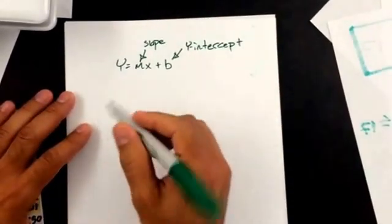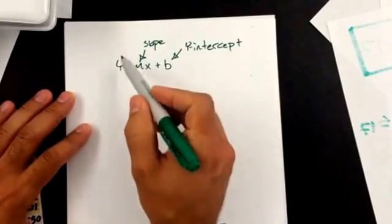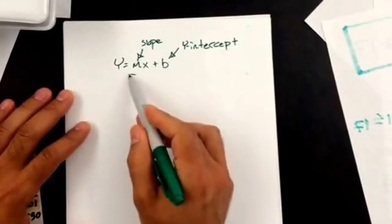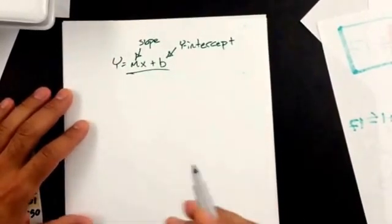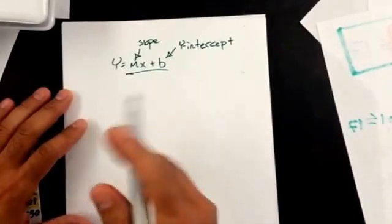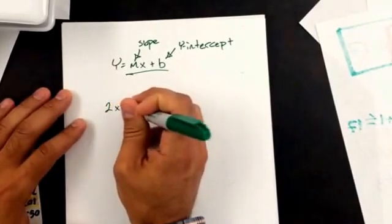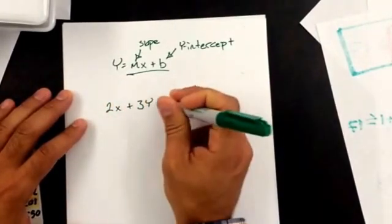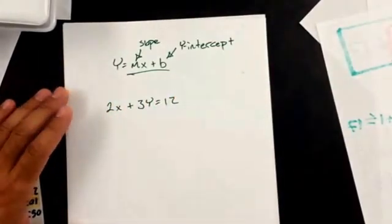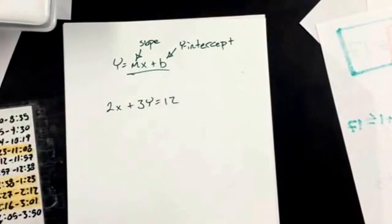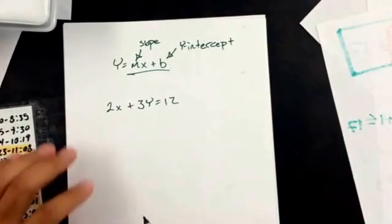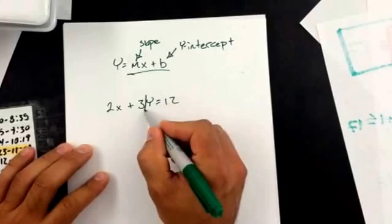So if I have an equation that's not the y by itself and everything else on the right hand side of the equation, then it's not in slope intercept form. So if I have something like 2x plus 3y equals 12, I want to get it into slope intercept form to help me graph it. In order to get this into slope intercept form, I need to isolate this y.